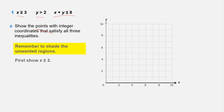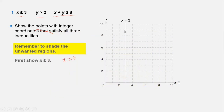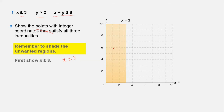We draw the graph for x = 3 as a solid line, not a broken line, because the inequality is greater than or equal to — meaning 3 is included. Next we shade the unwanted region. Since x ≥ 3, all points satisfying this inequality lie to the right, so the unwanted region is the left side, which gets shaded. The next inequality is y > 2.